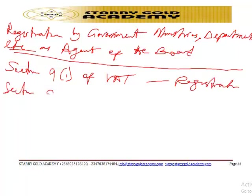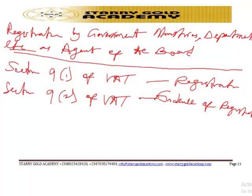Section 9 subsection 2 of the VAT Act states that every contractor transacting business with a government ministry, statutory body, or other agent of the federal, state, or local government shall produce evidence of registration with the FIRS as a condition for obtaining contracts. This sets a condition for every contractor and corporate organization transacting business with any government ministry, statutory body, or agency.